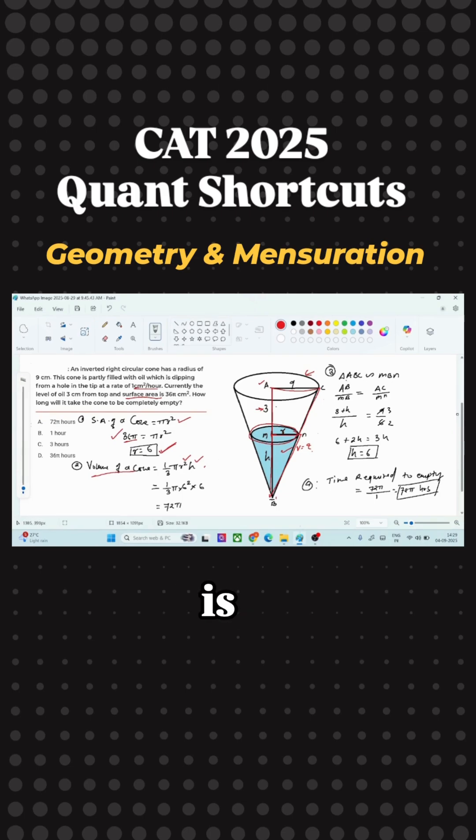So if you look at these two triangles, that is triangle ABC and triangle MBN, I can take the ratio of side of first triangle to the side of second triangle, that is AB by MB. So AB is nothing but the height of the larger cone, which is 3 plus H. This is the height of the larger cone.